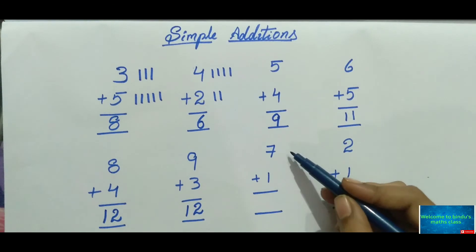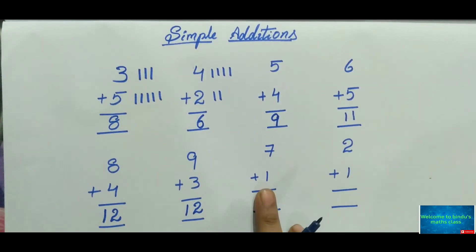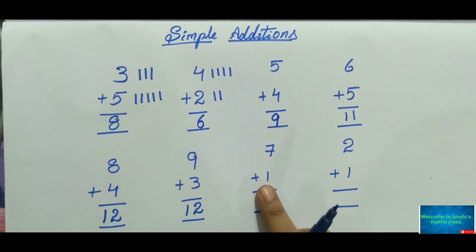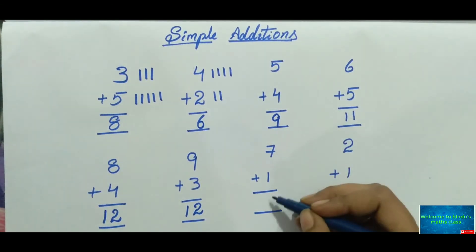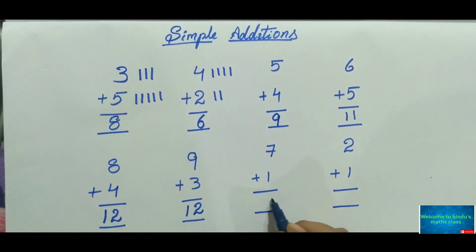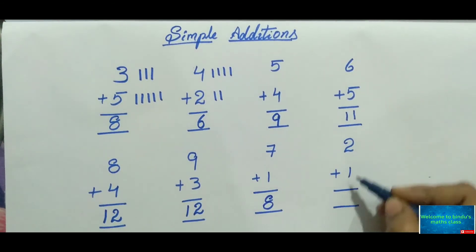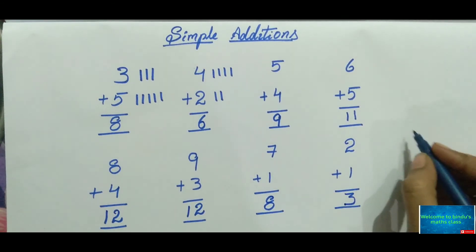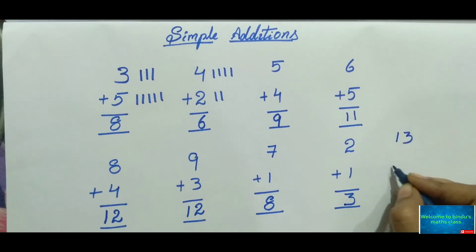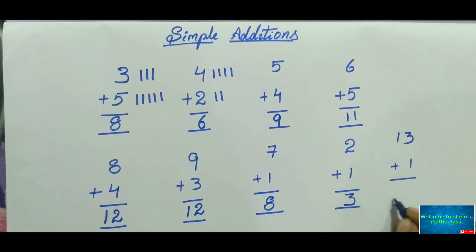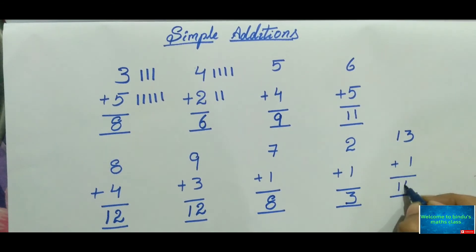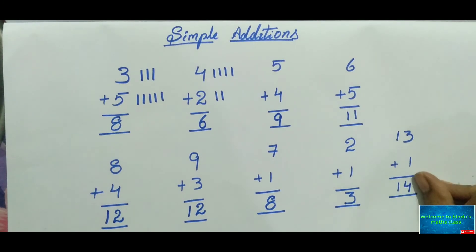Now a shortcut: seven plus one. When you add one to any number, you get the very next number. So seven plus one gives eight — the number after seven. Two plus one gives three. And for a larger number, thirteen plus one: the number after thirteen is fourteen, so thirteen plus one equals fourteen.